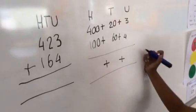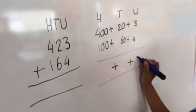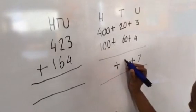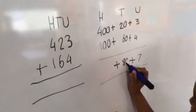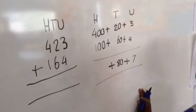So first we add up our units, 3 plus 4 equals 7, 20 plus 60 equals 80, and 400 plus 100 equals 500.